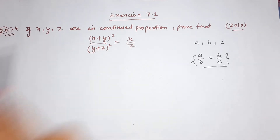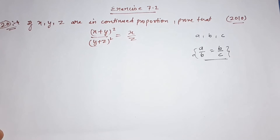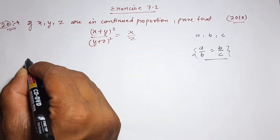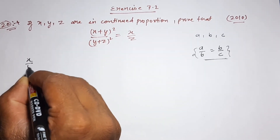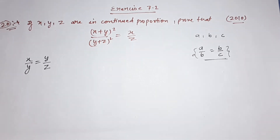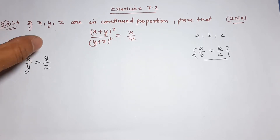So for x, y, z in continued proportion, we arrange them as: x upon y is equal to y by z. This is the key relationship for continued proportion with three terms.